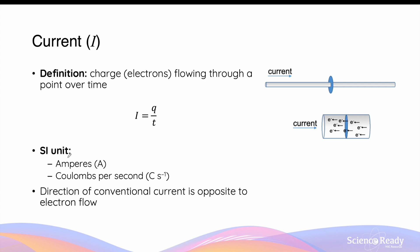The SI unit for current is amps or amperes, capital A for short. Since current is given by charge, which has the SI unit of coulombs, divided by time, which has the SI unit of seconds, we can also express current in terms of coulombs per second. The two units of amperes and coulombs per second are equivalent.